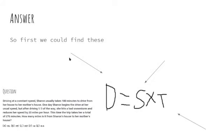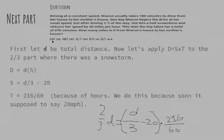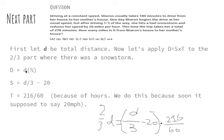Now the answer. So first, we could insert this distance equals speed times time. And then after, there's going to be an equation, and then we can find D. Now, first, let d be the total distance, like a small d.